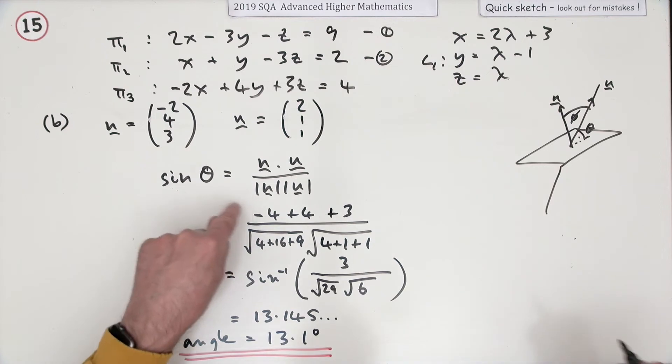You could just have found the cosine, inverse cos, and then take it away from ninety, but you'd get the same result.